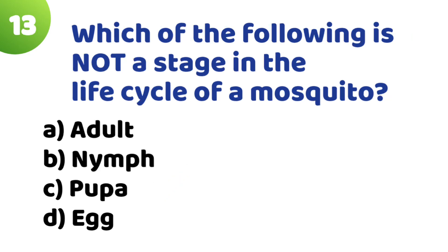Question: Which of the following is not a stage in the life cycle of a mosquito? Option A: Adult. Option B: Nymph. Option C: Pupa. Option D: Egg. The correct answer is Option B — Nymph.